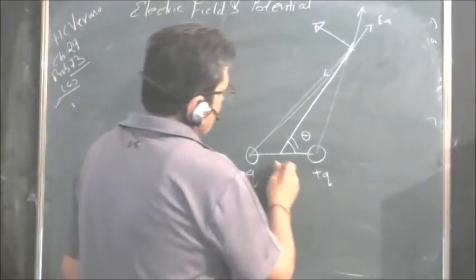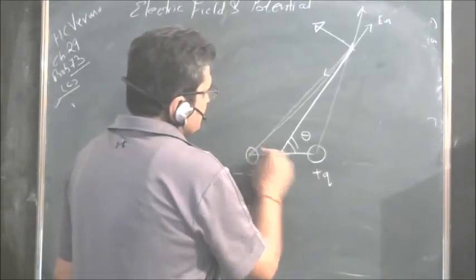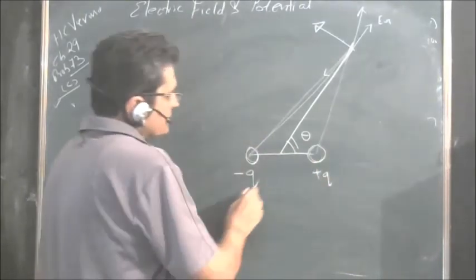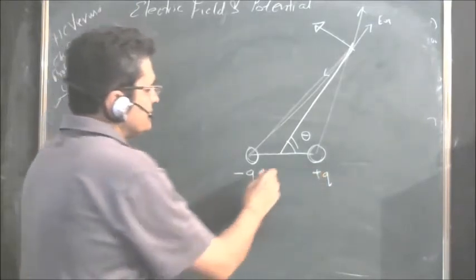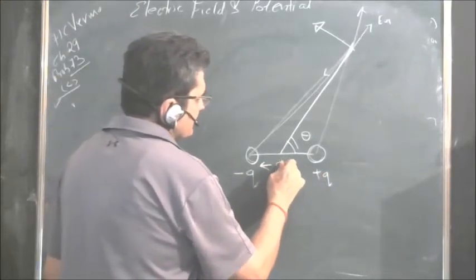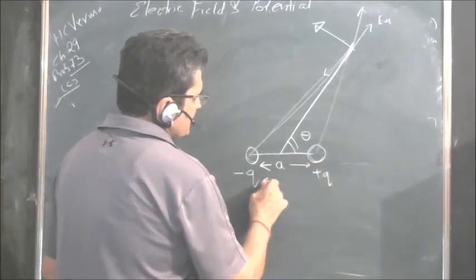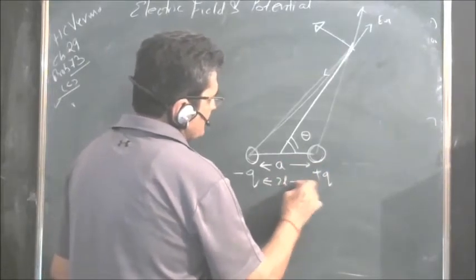In the dipole, the basic things which we should know: there are two equal and opposite charges separated by some distance, say A, or we can take it as twice L or whatever.